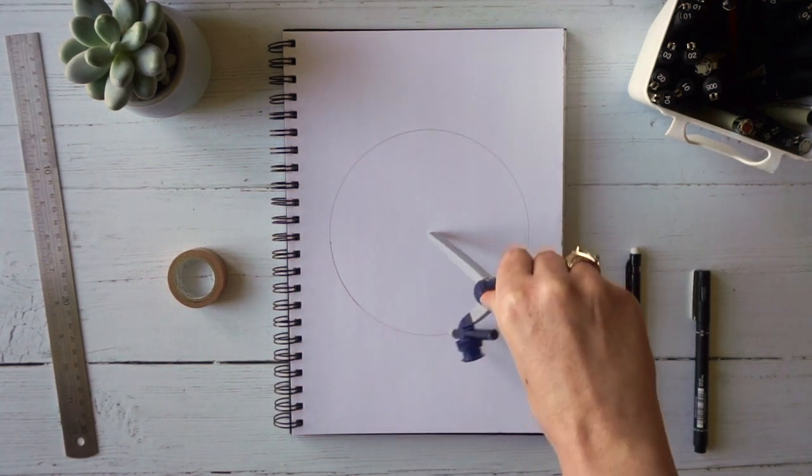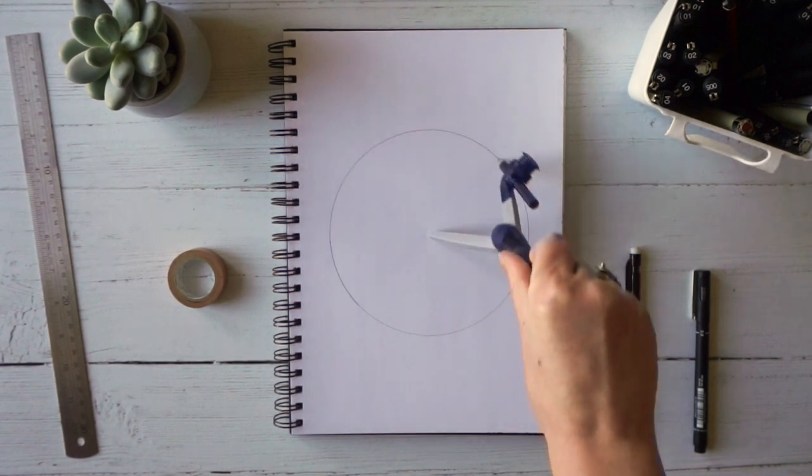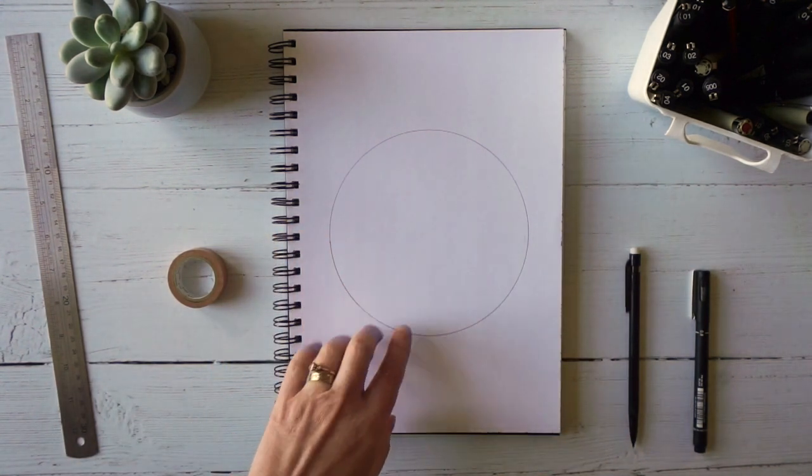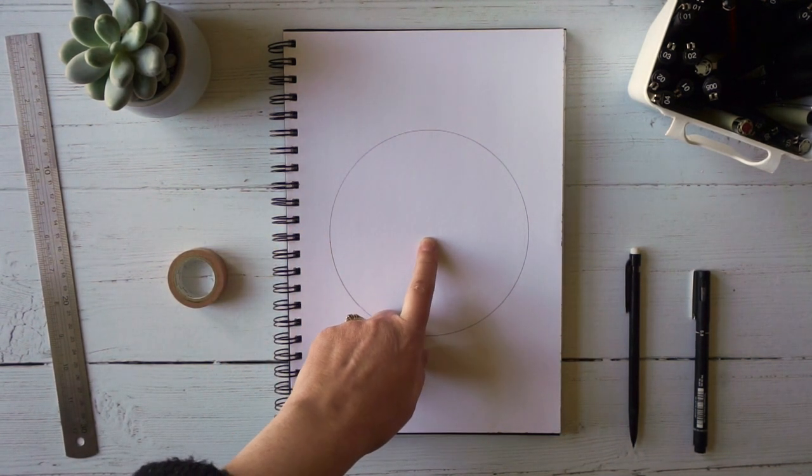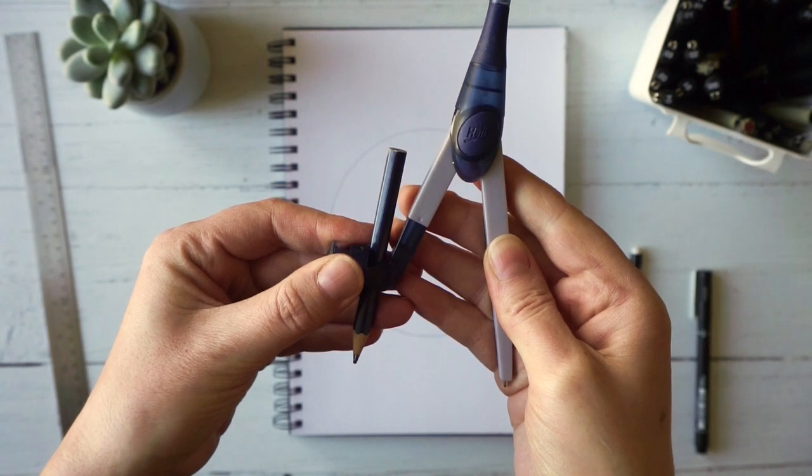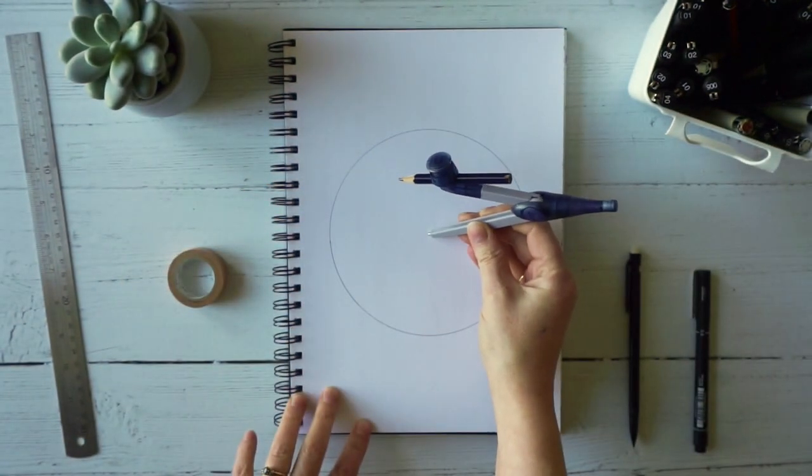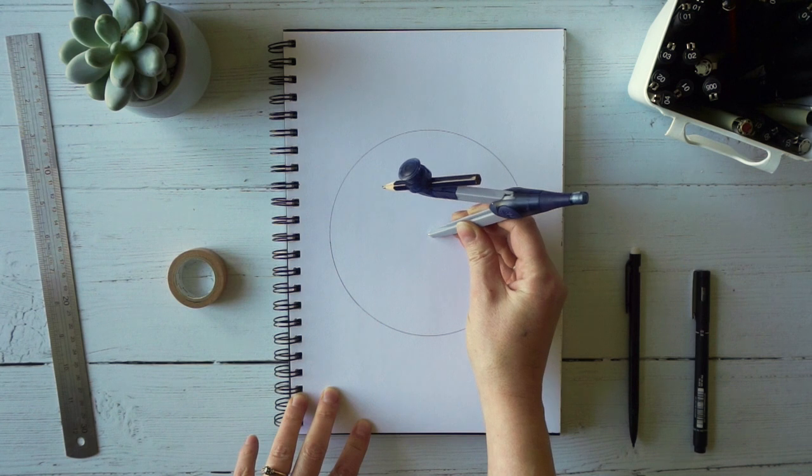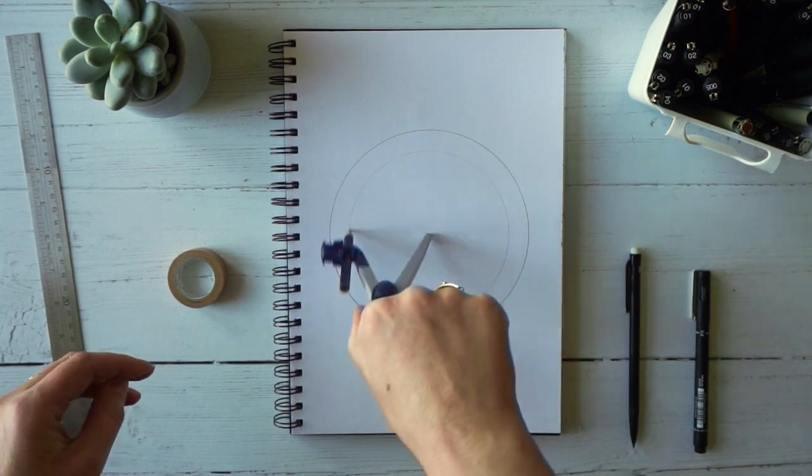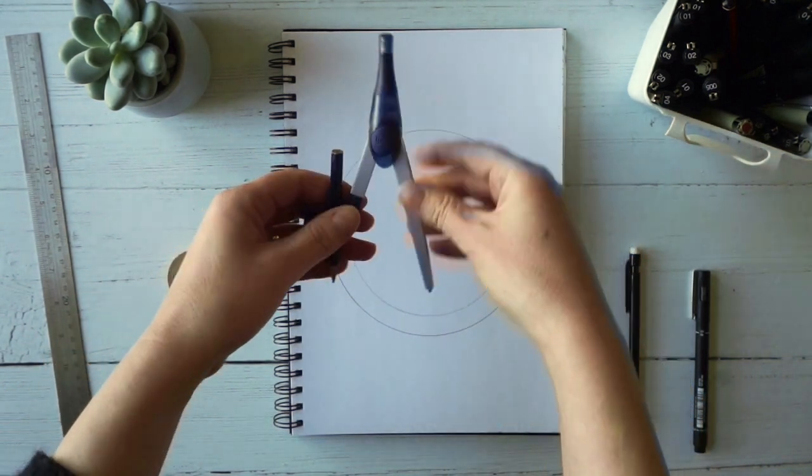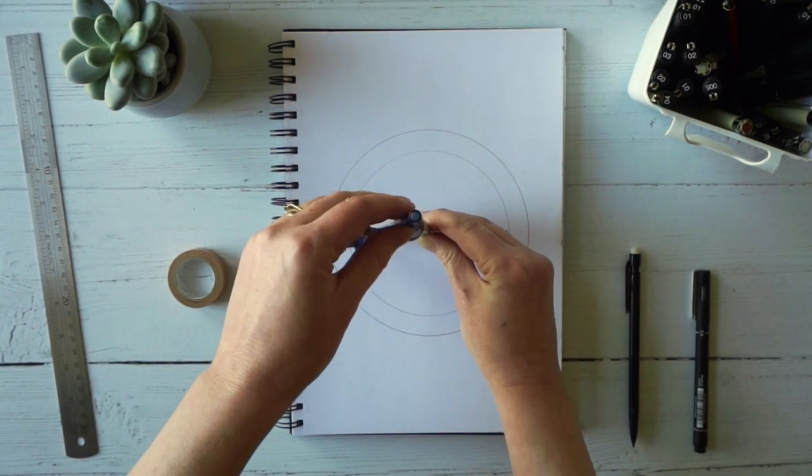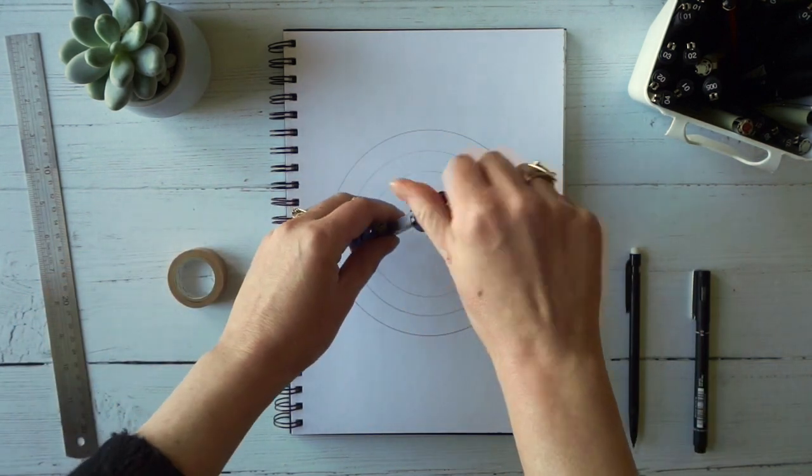I'm going to draw a circle and then I want some guidelines. I've got the little point where the compass went in, so I'm going to change the width, narrow it a little bit, put that point back in the same spot, and keep narrowing this and drawing little circular guidelines for myself.